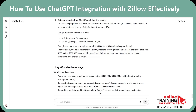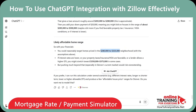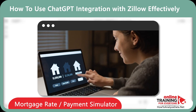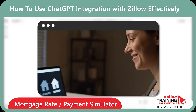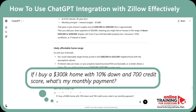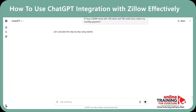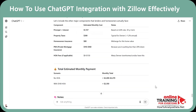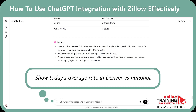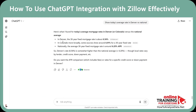In this case, the affordable range is between $280k and $325k. Now I can simulate payments for a specific price range and see how rates or down payments change my monthly costs — perfect for what-if scenario planning when rates move. Prompt: If I buy a $300k home with 10% down and a 700 credit score, what is my monthly payment? Completed calculations appear in seconds. Are you interested in mortgage rates? Show today's average rate in Denver versus national.